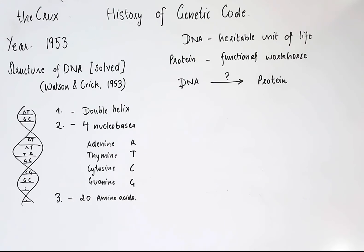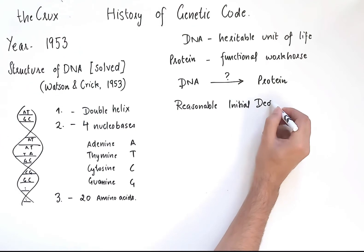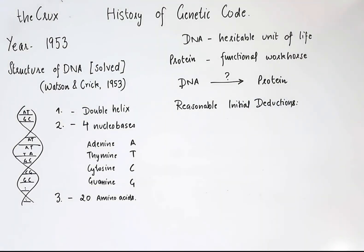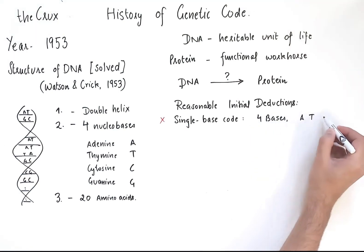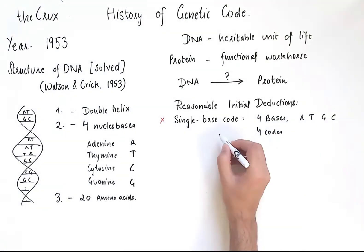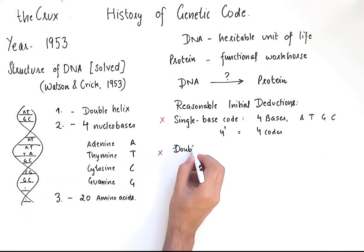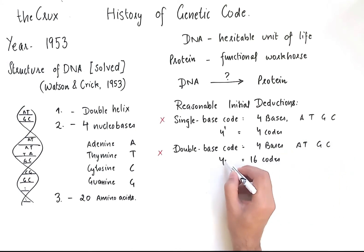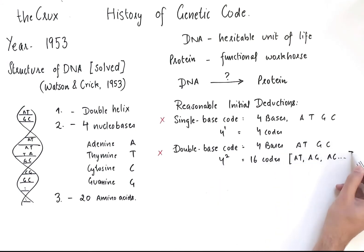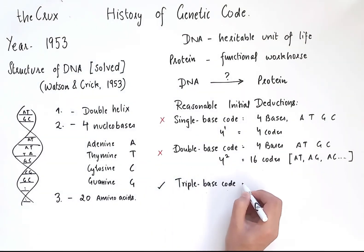Scientists thought about it, and the most reasonable initial deductions were as follows. First, there cannot be a single base code, because we have four bases, and that gives only four amino acids maximum, but we have 20. Second, there cannot be a double base code, because that gives only 16 possible codes, so we're short of four amino acids.